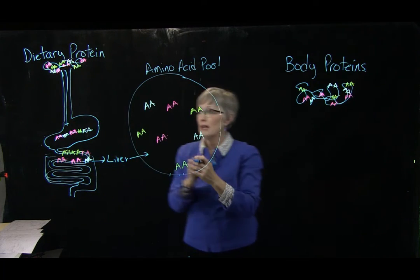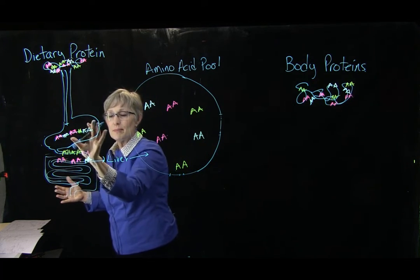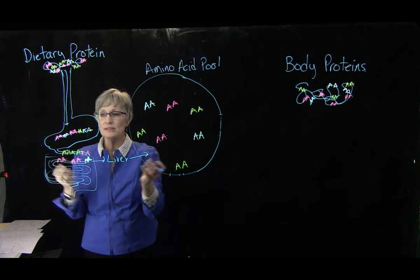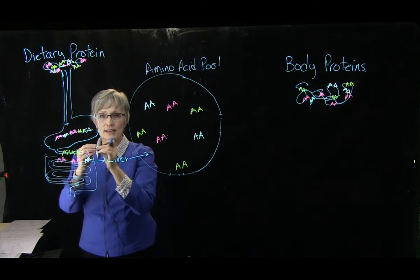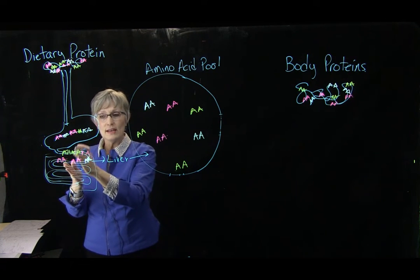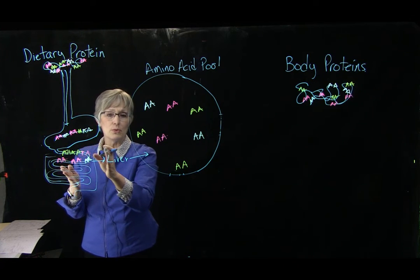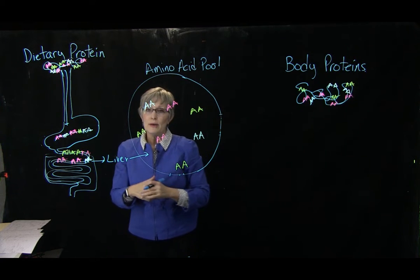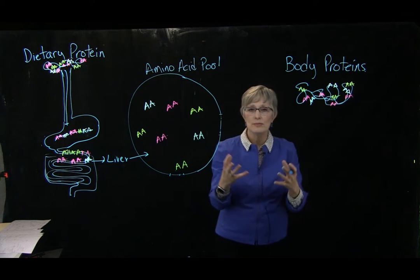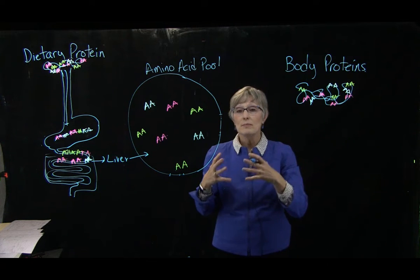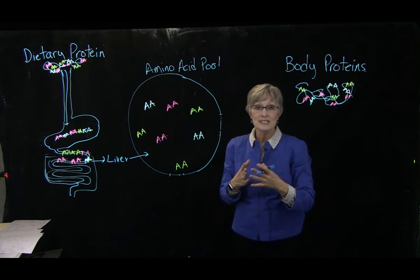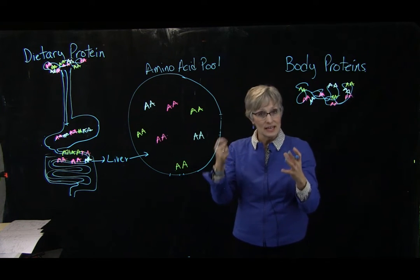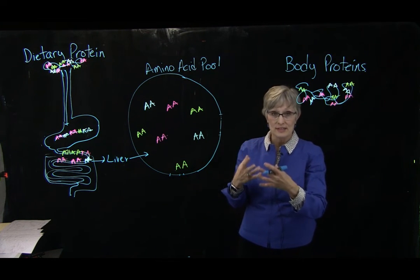When we consume proteins, they are very folded, complicated molecules. Once consumed, the stomach will unfold that protein through a process called denaturation. Then in the small intestines, the amino acids are ripped apart into individual amino acids that are absorbed, hit the liver first, and then dispersed throughout the body. We collectively call all those individual amino acids throughout the body the amino acid pool.